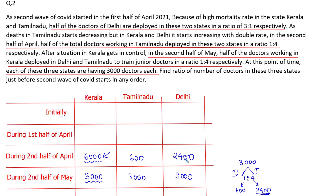These are the numbers of doctors in the three states during the second half of April. Now, in the second half of April, half of the total doctors working in Tamil Nadu are deployed in these two states in a ratio of 1:4. After deducting that half, the number of doctors in Tamil Nadu is 600, so during the first half of April Tamil Nadu must have had 1200 doctors — half of 1200 is 600.